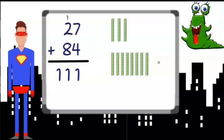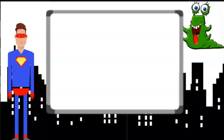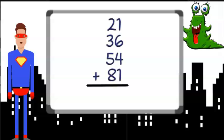Okay, now let's get back to work. We have an earth to save. Our second problem is more challenging. It is 21 plus 36 plus 54 plus 81.